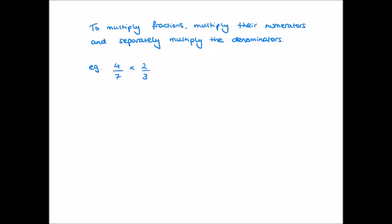We can generalize this: to multiply two fractions we simply multiply their numerators and then separately multiply their denominators. So four-sevenths times two-thirds gives a numerator of four times two which is eight, and a denominator of seven times three which is 21. If we want to multiply an integer by a fraction, such as six times a fifth, we write six as six over one, giving six over five.